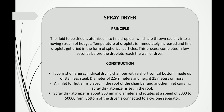Now let's talk about the construction of the spray dryer. Basically it consists of a large cylindrical drying chamber with a short conical bottom, made of stainless steel. The chamber diameter is 2.5 to 9 meters and the height can be 25 meters or even more. Hot air passes through the inlet from the roof. An inlet provides the spray disc atomizer, which converts the liquid into spray form as it enters the chamber. The spray disc atomizer is about 300 mm in diameter and rotates at 3,000 to 50,000 RPM.